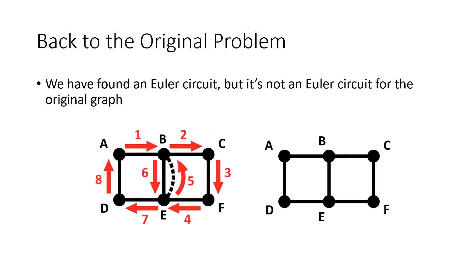So what does that have to do with the original problem? Remember, the original problem did not have that extra edge that we drew from B to E. So how do we take this solution that we got and relate it back to the original situation?